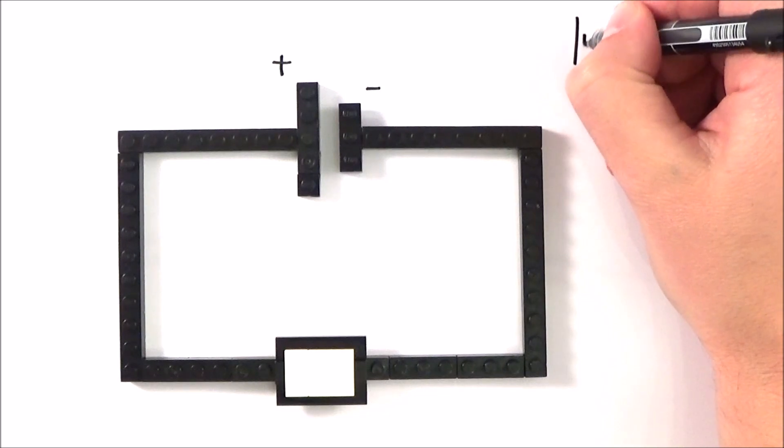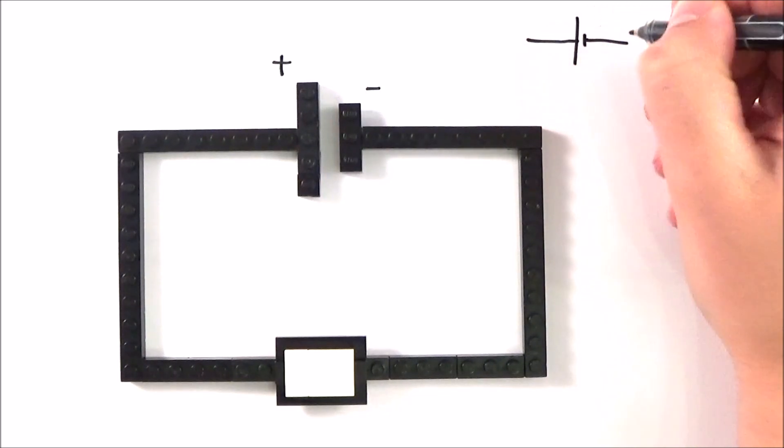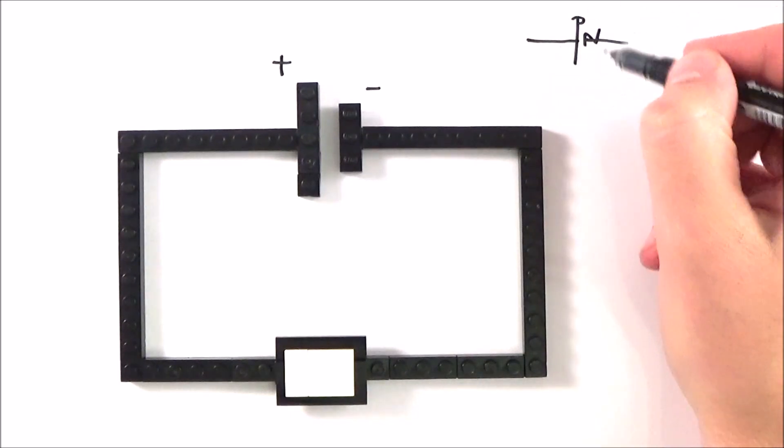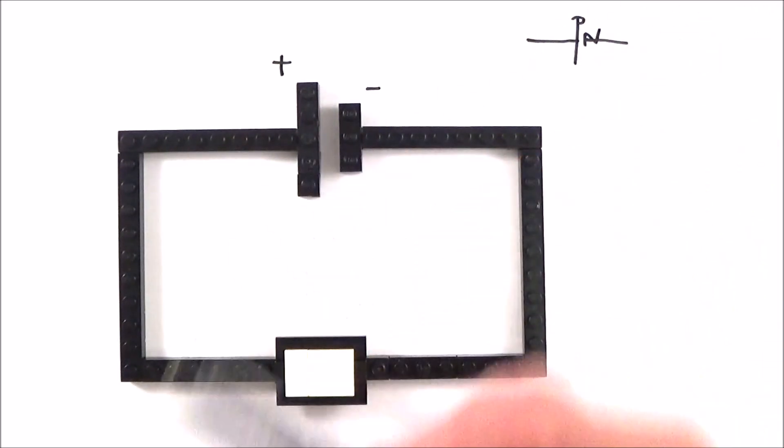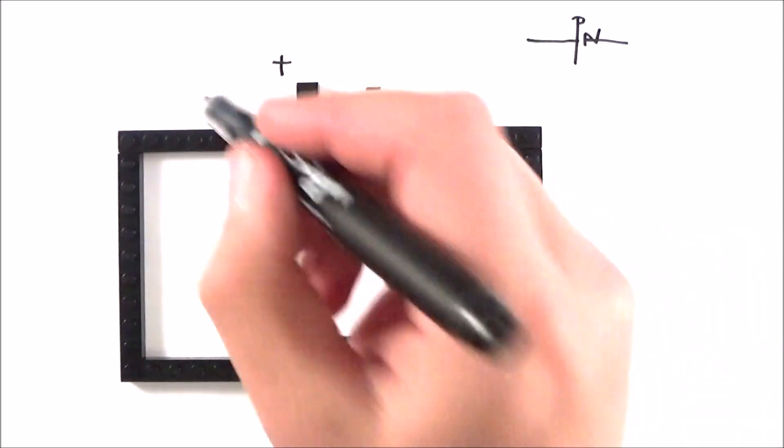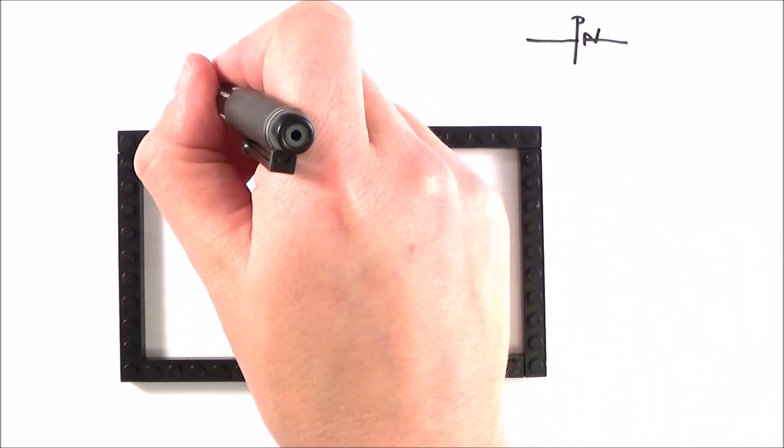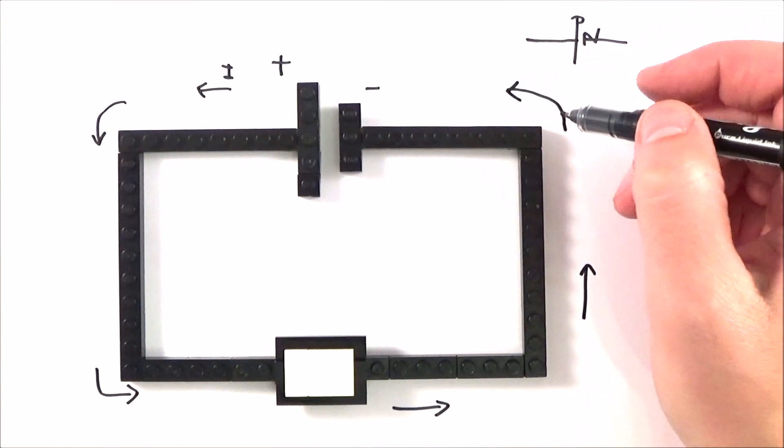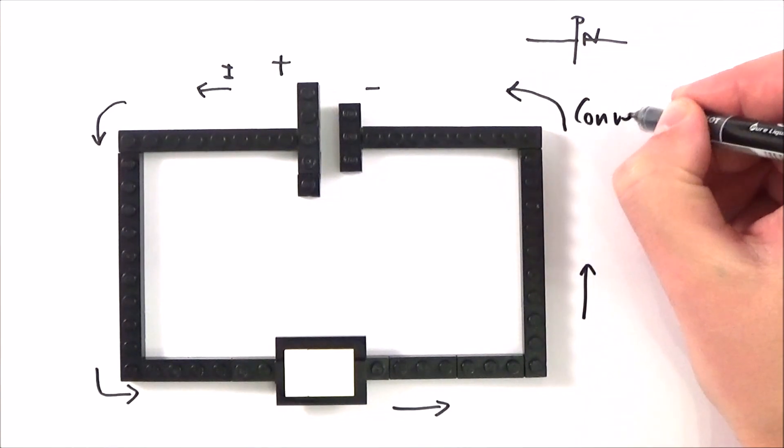Now the way to remember this that I find useful is if you have your cell, we have both the positive and the negative sides, and it may be this kind of thing here will help. The convention is that current flows from positive to negative. So there we go, this is what we call conventional current flow that goes from positive to negative.